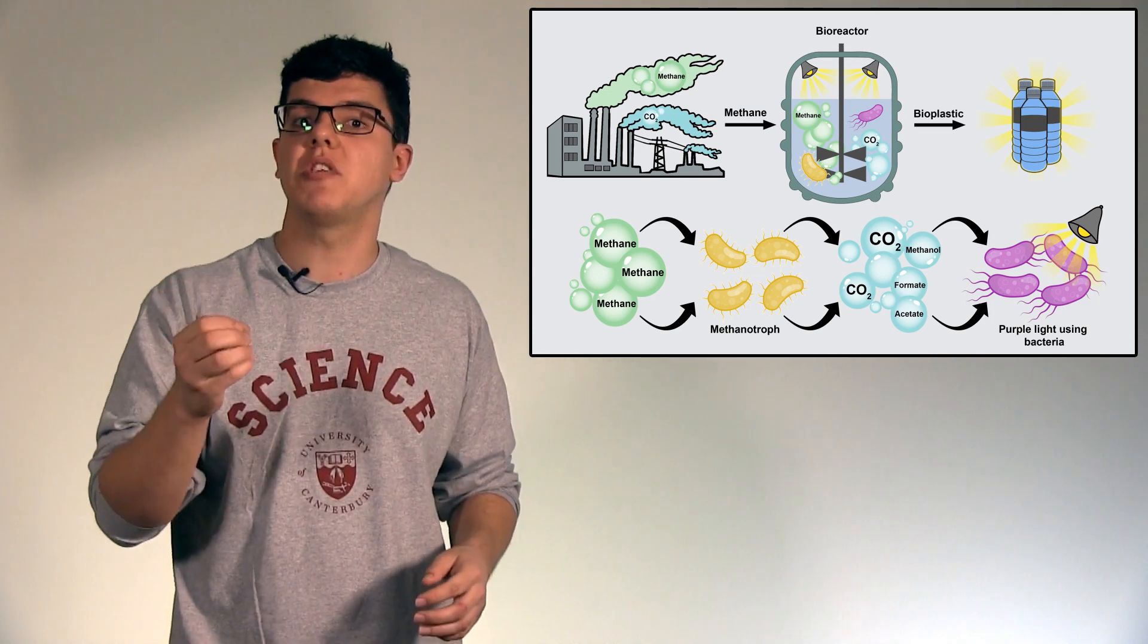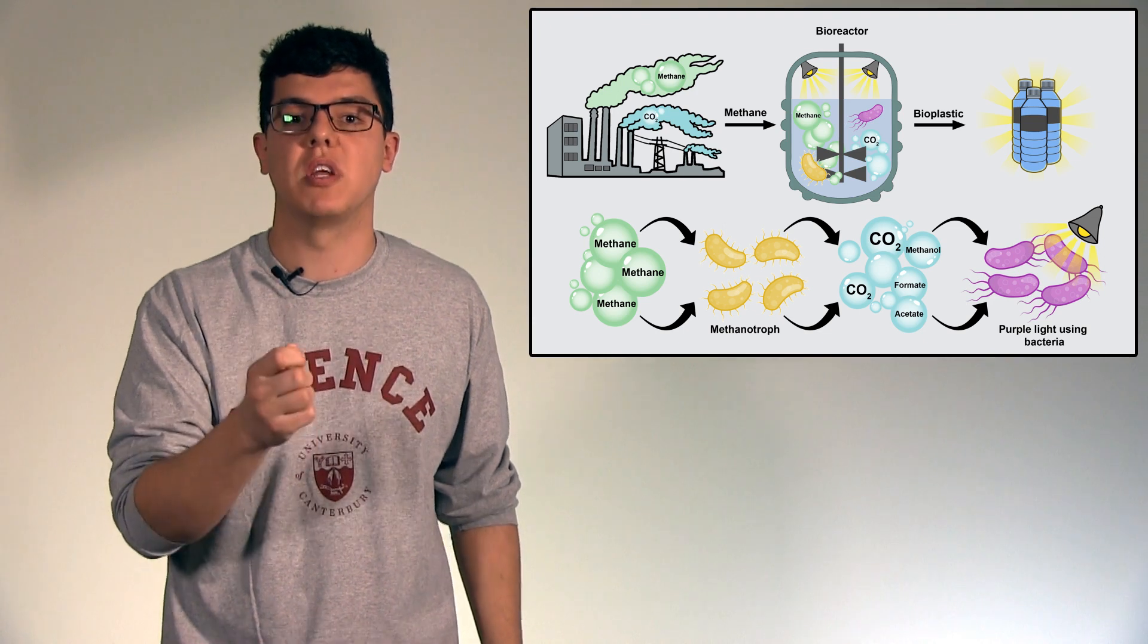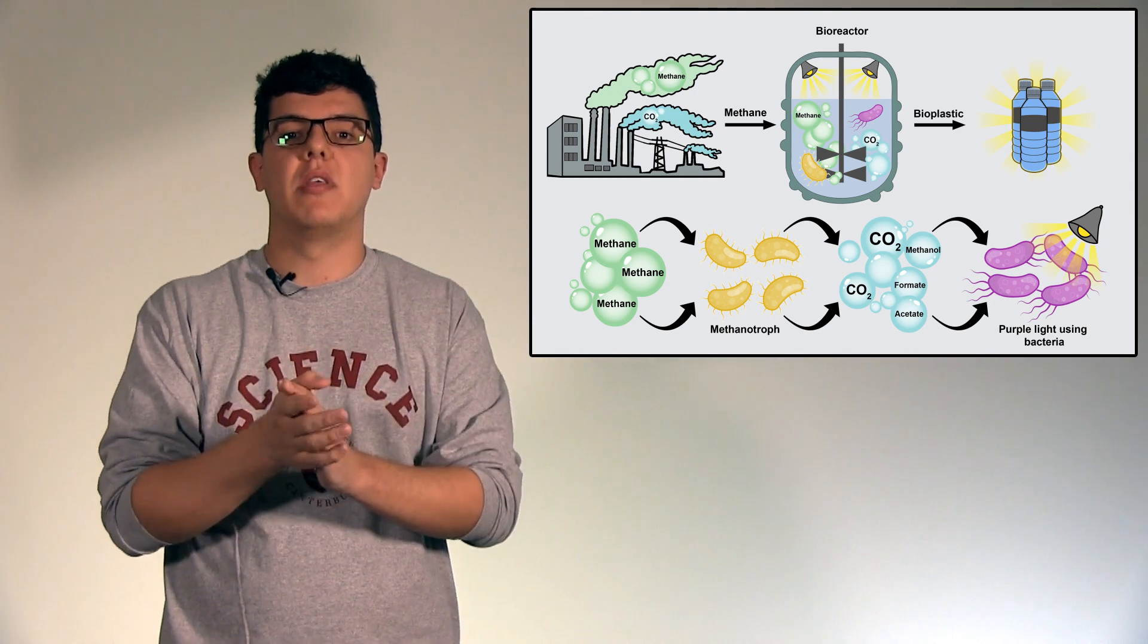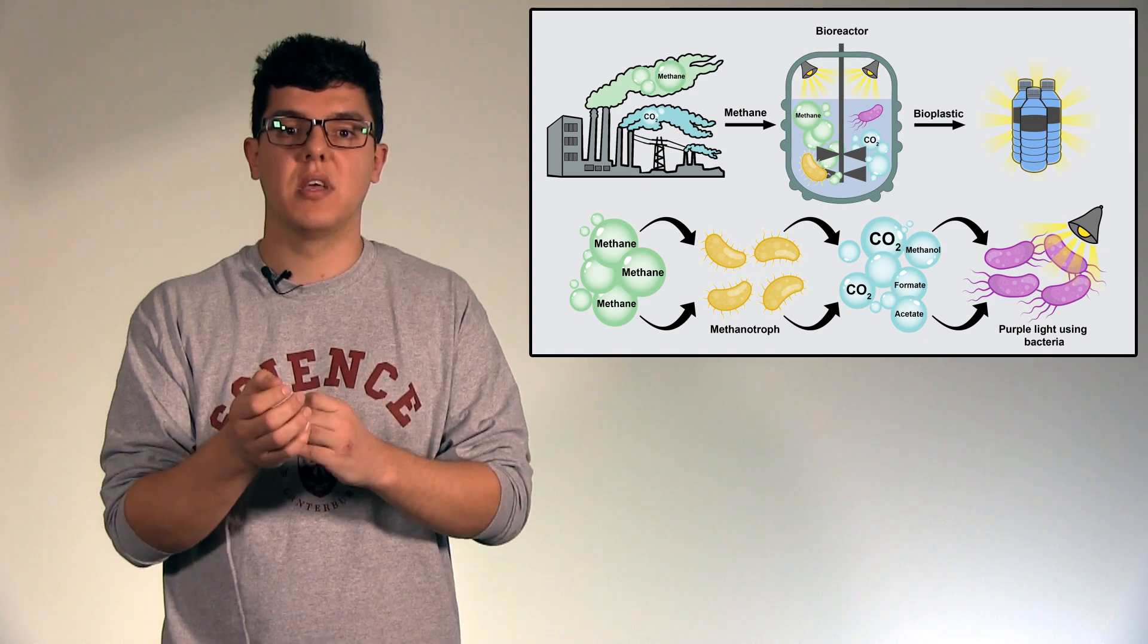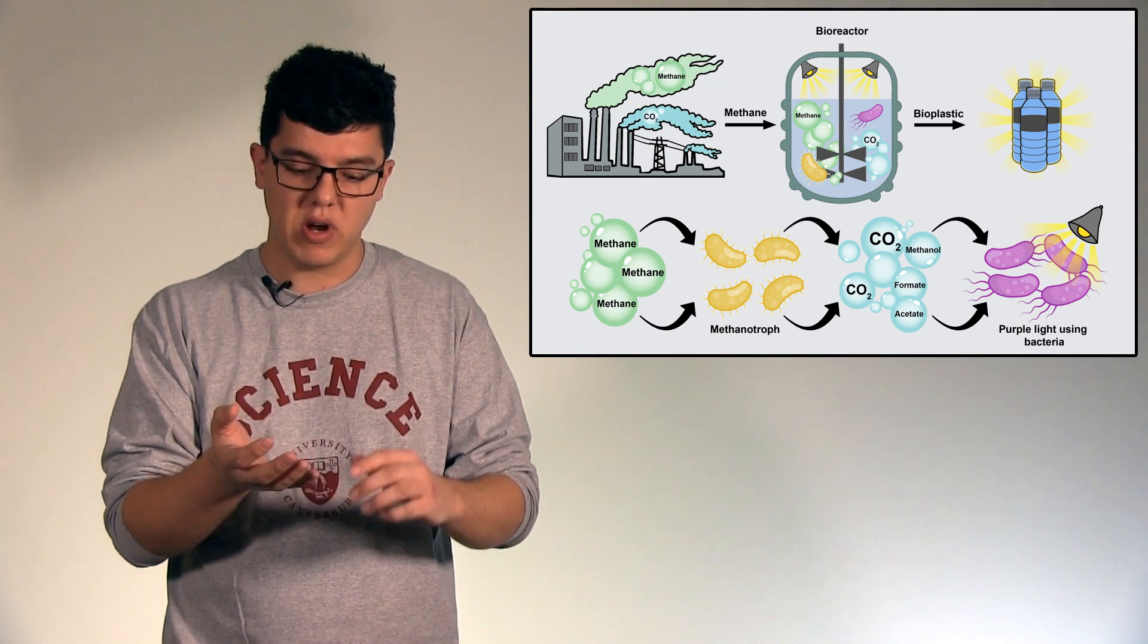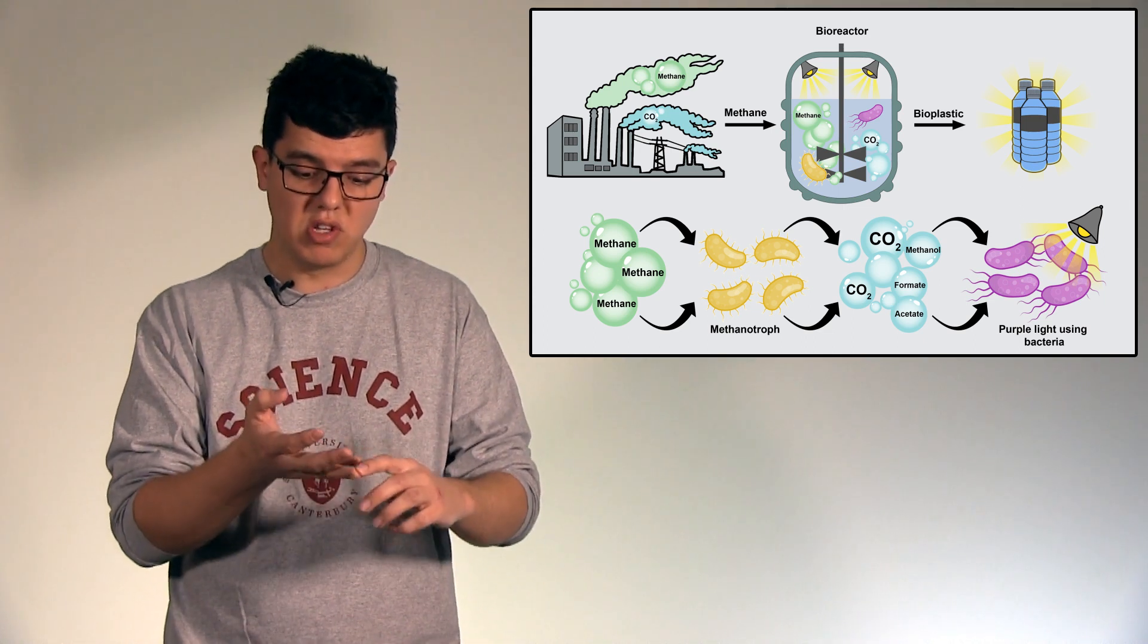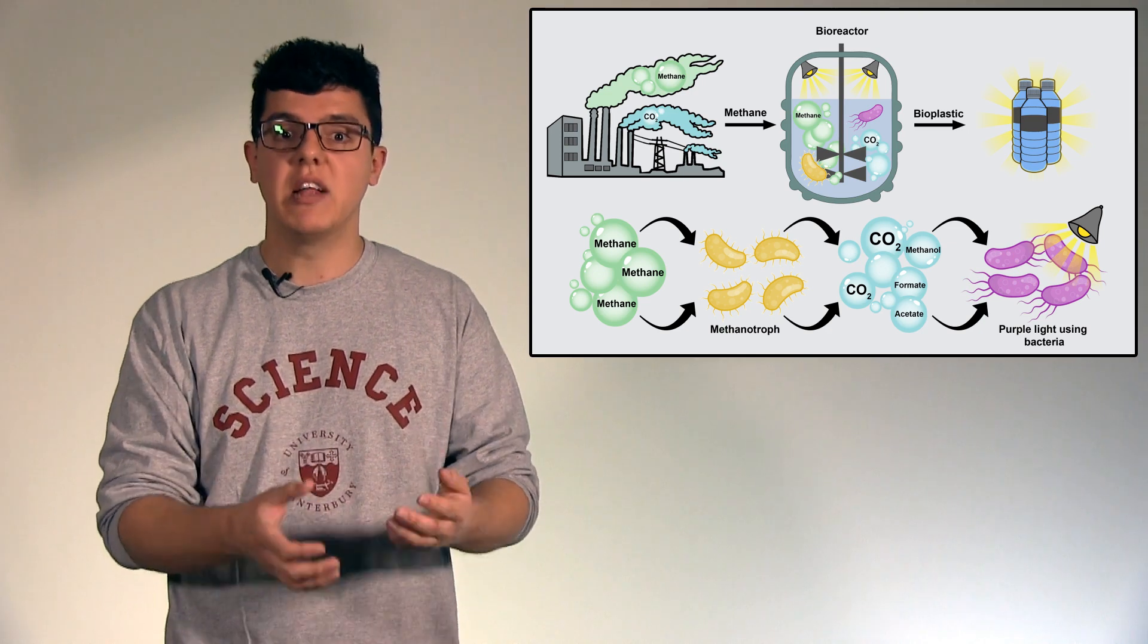Our purple light using bacteria friend eats these and stores up that special kind of nutrient. We then harvest the purple light using bacteria for that bioplastic. This is really exciting because this biodegradable plastic has been used to create water bottles and in the medical industry to create sutures and staples, slings and surgical mesh.